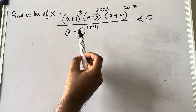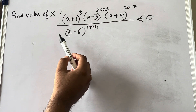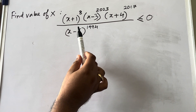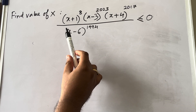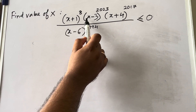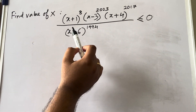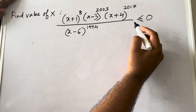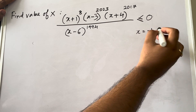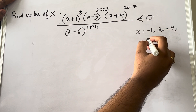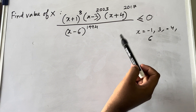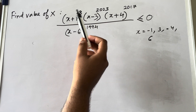Getting back to the wavy curve problem — you can see a very complex problem here. It looks complex but the solution is very simple. First, we find the critical points. To find the critical points, equate each factor to zero. The critical points are x = −1, x = 3, x = −4, and x = 6.